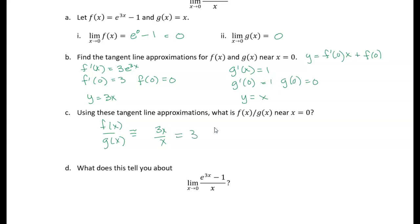And when you're dealing with the tangent line approximation, the closer you get to 0, the closer that tangent line approximates the actual function. So near x equals 0, you can see it makes sense that if we look at the ratio of the tangent lines, it gives us 3, so the limit is 3. So that just kind of sets the stage for L'Hopital's rule.